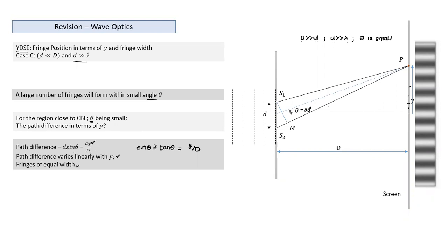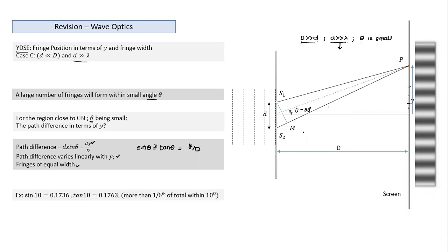All these conditions — screen at large distance, d much less than lambda causing large fringe number, and small θ for the central region — ensure fringe width is uniform. Even for a screen subtending only about 10° on each side, a large number of fringes form with equal spacing. The error from using sin θ ≈ tan θ is only about 1% even up to θ = 10°.